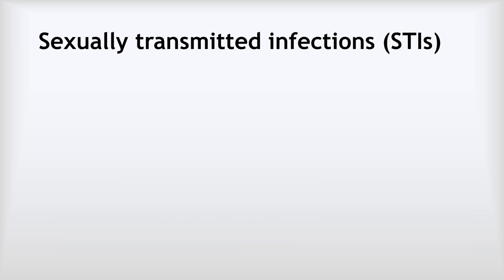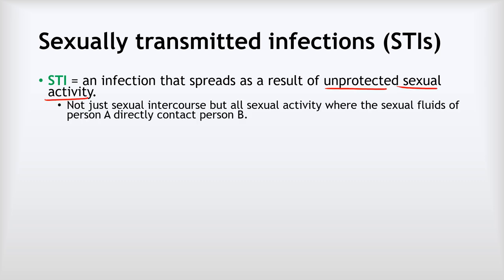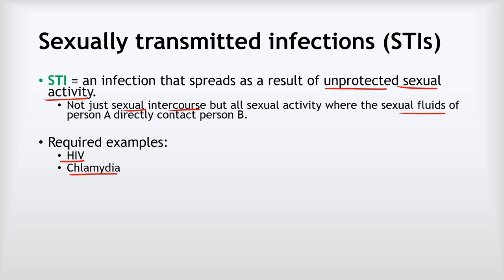The last method of disease transmission — and perhaps the most important in terms of your own decision-making — is sexually transmitted infections. STIs are infections that spread as a result of unprotected sexual activity. Importantly, this includes all sexual activity where the sexual fluids of one person directly contact another. The required examples are HIV, which can lead to AIDS, and chlamydia. There are many others — syphilis, gonorrhoea, genital warts — none of them pleasant, all of them to be taken seriously.